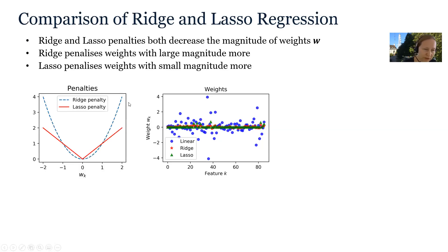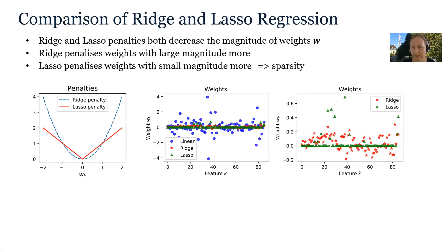If we plot the ridge and LASSO penalties in the same graph, we can see that the ridge penalty penalizes weights with larger magnitude more, for both positive and negative weights. On the other hand, the LASSO penalty penalizes weights with smaller magnitude more, and this drives smaller weights to zero more quickly, which in turn introduces sparsity.